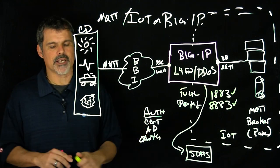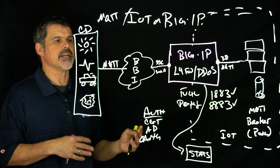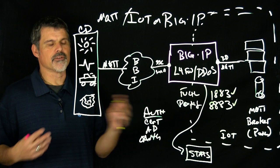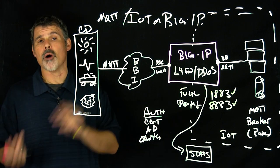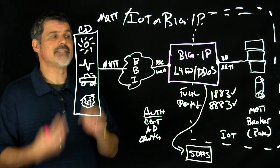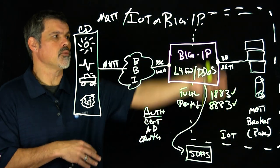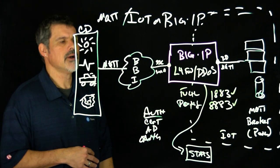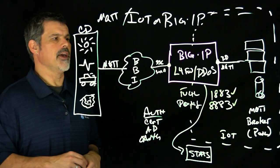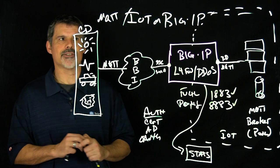One last thing we can do is protocol normalization or protocol conversion. Say you want to go from binary to text, or text to JSON — depending on what's required on the back end, we can even do that within the Big IP device.